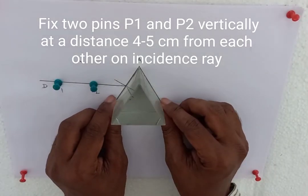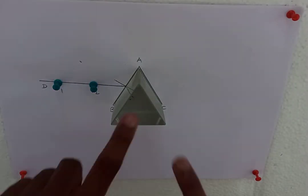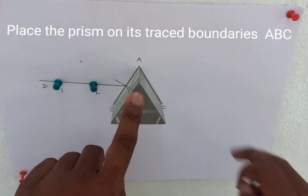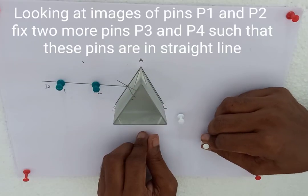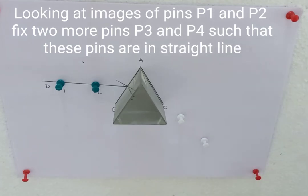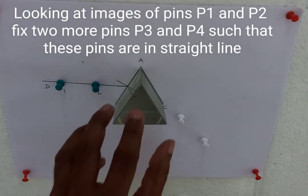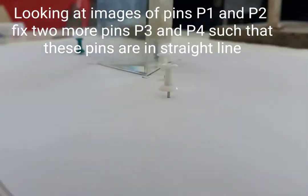On the ray of incidence, fix two pins P1 and P2 vertically. Place the prism on its trace boundaries ABC. Look at the image of P1 and P2. Fix two more pins P3, P4 such that these pins are in the same straight line.